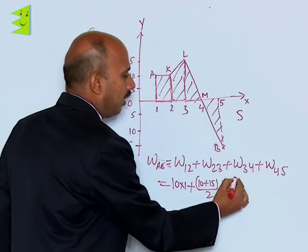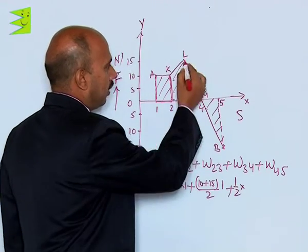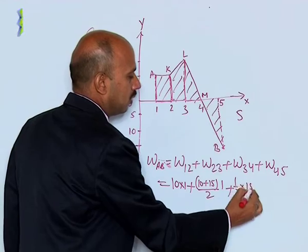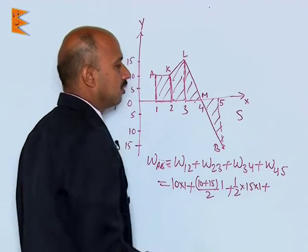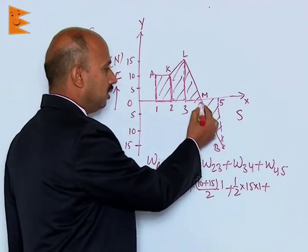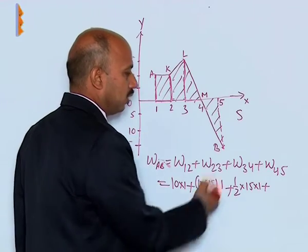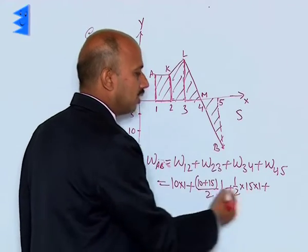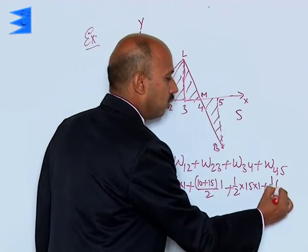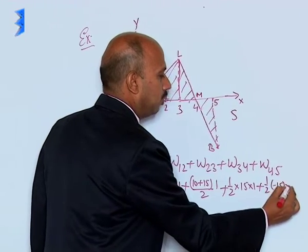Plus this is a triangle, half into 15 into 1. Plus see here the force is negative, so we can write again this is a triangle, half into minus 15 into 1.